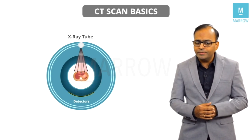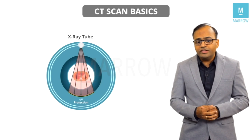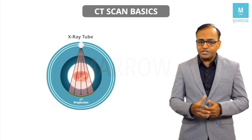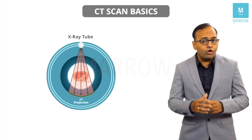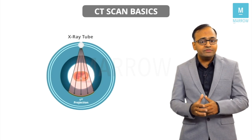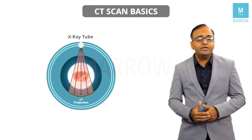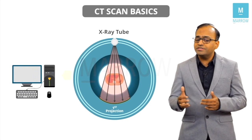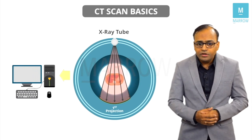This particular image which is obtained is called the first projection. This is an electronic image, so all the data which is collected is going to be transferred to a computer.